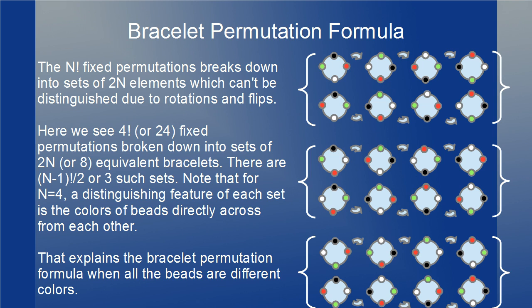This means that the entire set of fixed permutations, which is just n factorial, breaks down into sets of equivalent permutations where each set has 2n elements. Since each set has 2n elements, the total number of sets is n factorial over 2n, which is just (n-1) factorial over 2. Each set represents a single bracelet which has 2n different possible arrangements on the regular polygon in the circle.